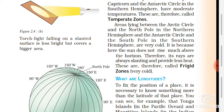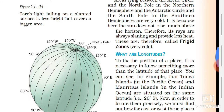Then there is the frigid zone. The areas lying between the Arctic Circle and the north pole in the northern hemisphere, and between the Antarctic Circle and the south pole in the southern hemisphere, are very cold because the sun does not rise above the horizon there. Its rays always land at a low angle and provide less heat. Therefore this is called the frigid zone — the place where things are very cold.